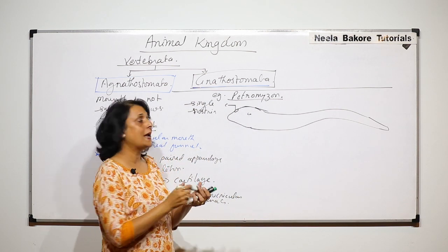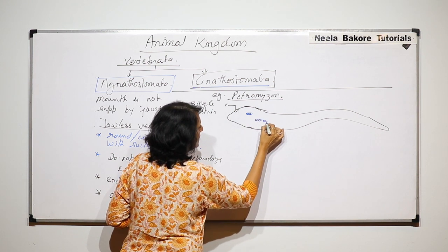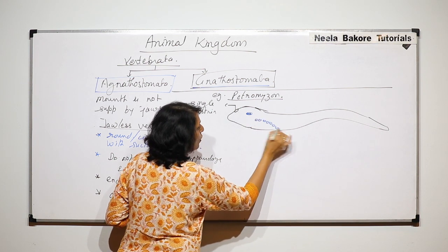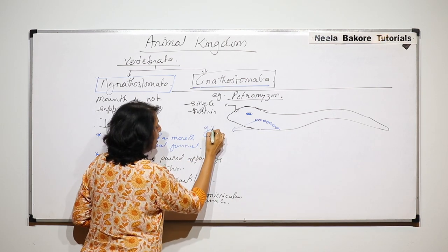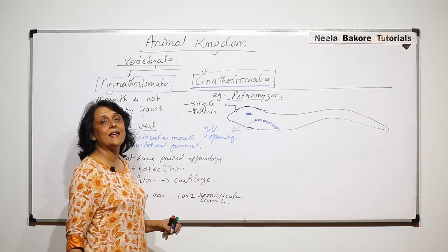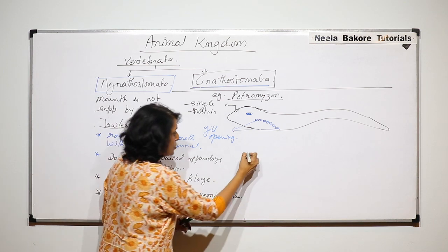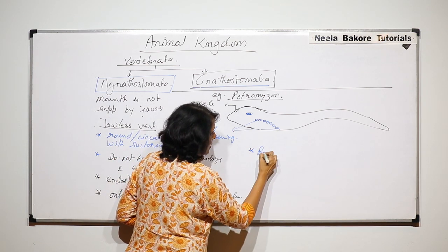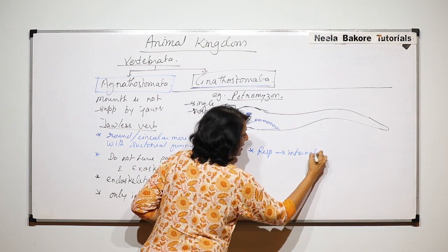On the lateral side we find these are the eyes. On lateral side we find a chain or a line of openings. These are actually gill openings or gill slit-like structures. That means respiration is through internal gills.